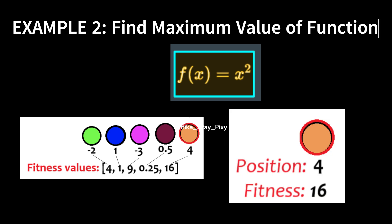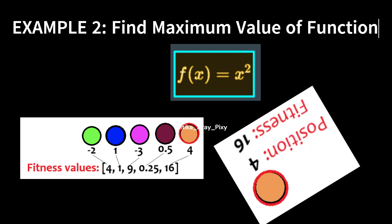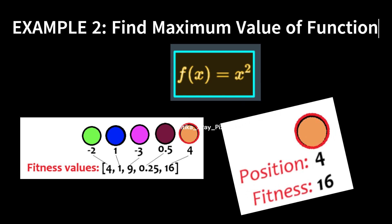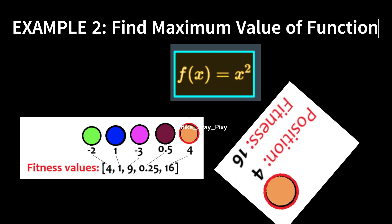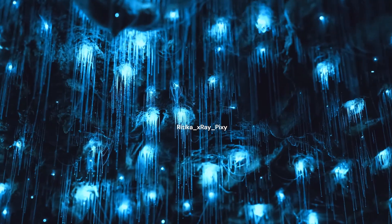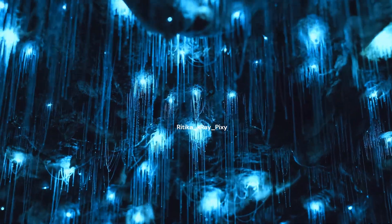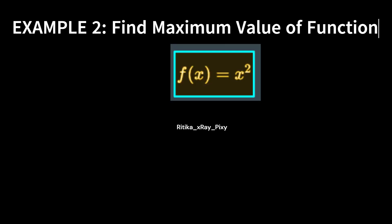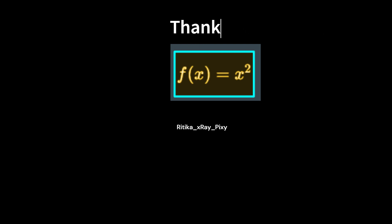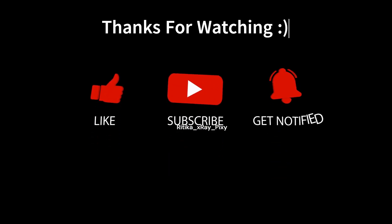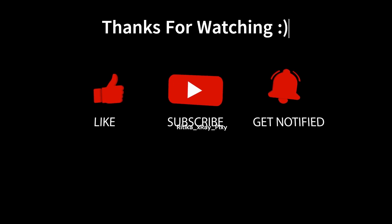We consider the best solution in each iteration. For example, for the agent at position 4, the fitness value is 4² = 16, which is the maximum fitness value obtained so far. The fitness value acts as a guide for the search process, helping the algorithm effectively explore the solution space and identify promising candidate solutions. We can define our own objective function according to the problem we want to solve, then apply the algorithm and find the best solution for the problem.